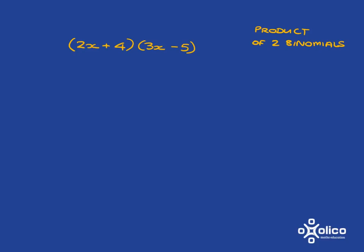We need this 2x to multiply with everything in the second bracket, so it multiplies with the 3x and also with the minus 5. Then we go on to the other term, which is 4, and it needs to multiply with everything in the second bracket - the 3x and the minus 5.